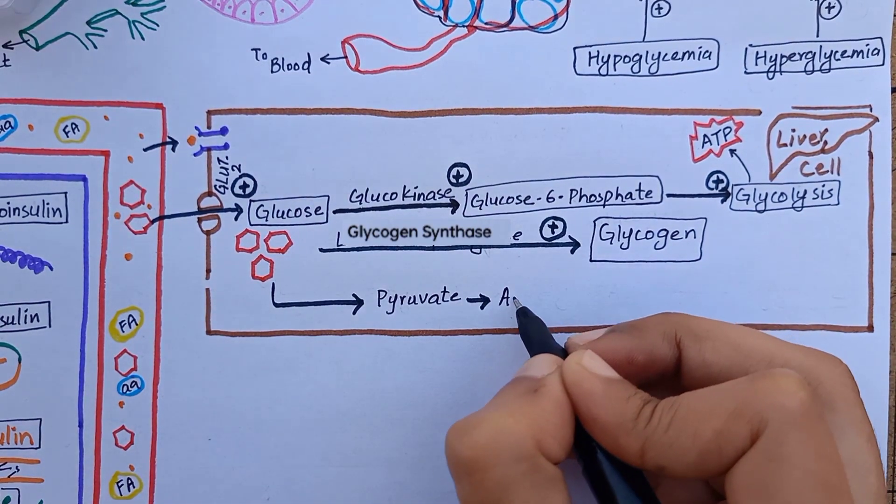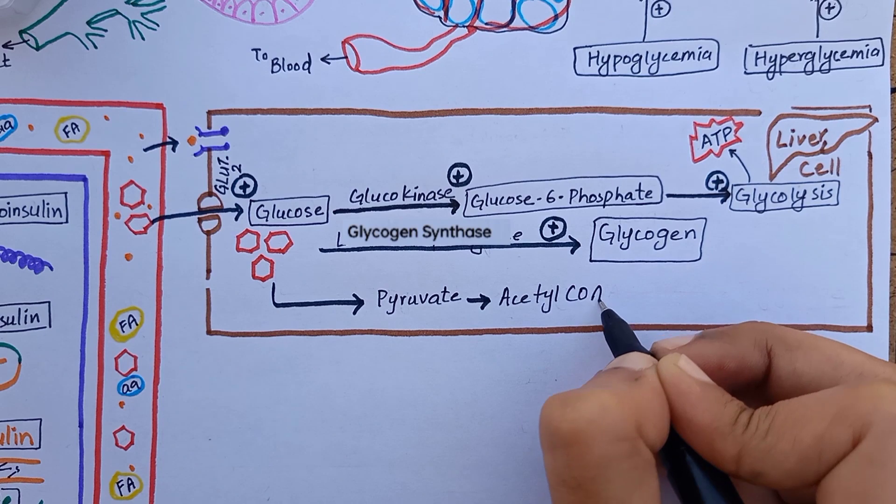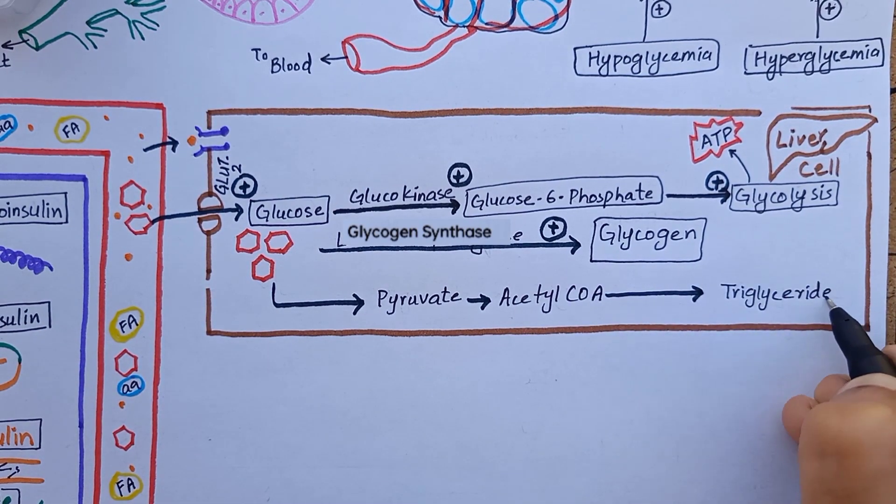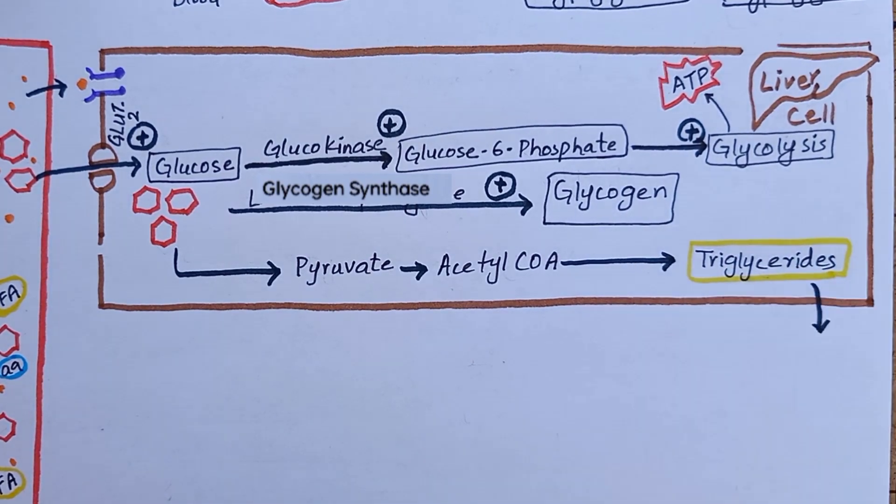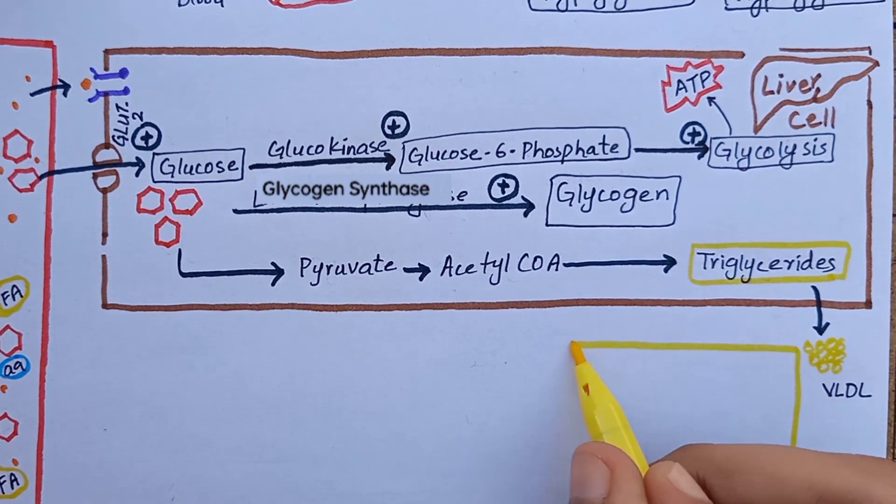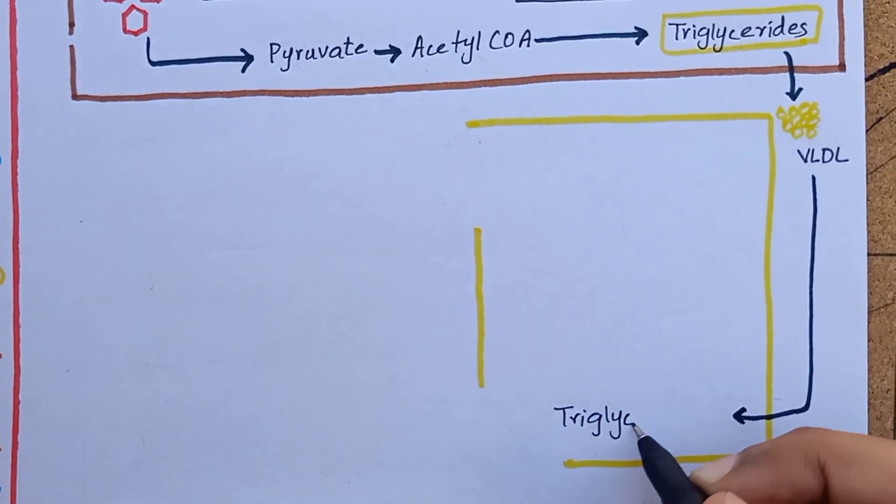Glucose splits into pyruvate in the glycolytic pathway, converted to acetyl-CoA and then into triglyceride. Triglycerides are released into the blood as very low-density lipoproteins and stored in adipose tissues as triglycerides.